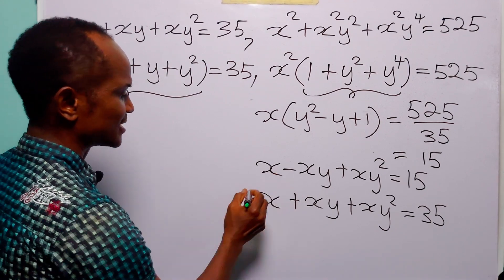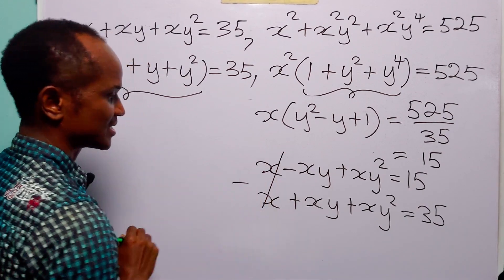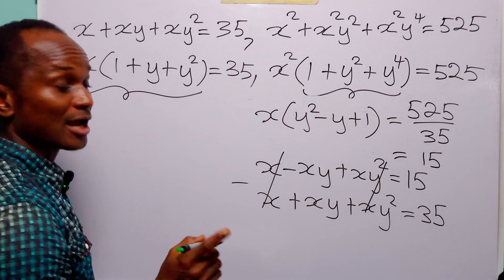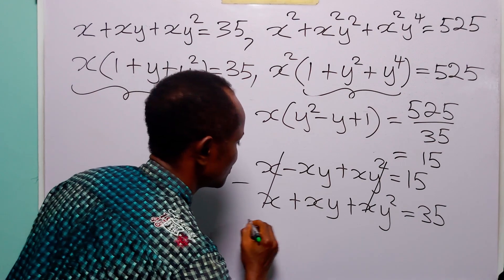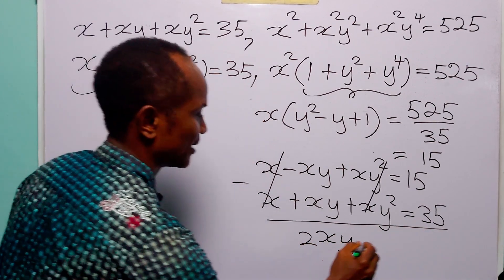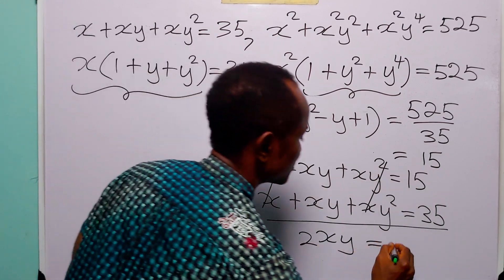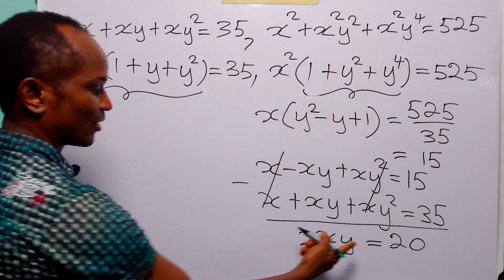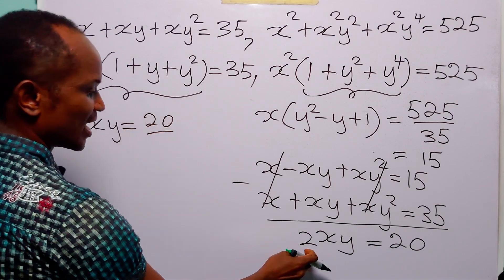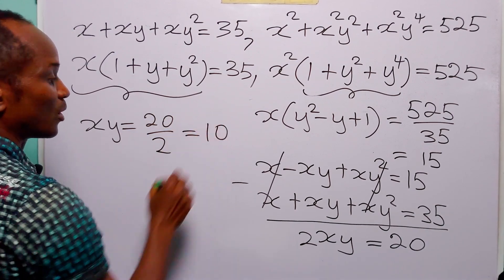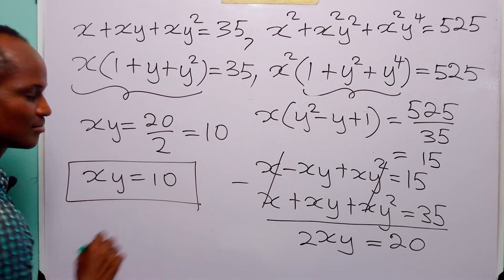Now when you look at these two equations, you will see that if we subtract the first equation from the second equation, we are going to get rid of x and xy squared, and we are going to be left with xy minus minus xy, which equals 2xy. And from here, we have that xy equals 20 divided by 2, which equals 10. So xy equals 10.